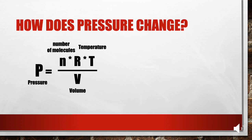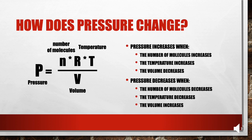But what about the V, the volume? Changes in volume have an opposite effect on pressure. Decreasing the volume forces an increase in pressure, because there is less room for the molecules to move, increasing the hits. While increasing the volume gives molecules more room to move, decreasing the chance of hits. So let's summarize exactly what the math tells us: pressure increases when the number of molecules increases, the temperature increases, or the volume decreases. Conversely, pressure decreases when the number of molecules decreases, the temperature decreases, or the volume increases.